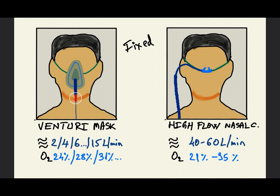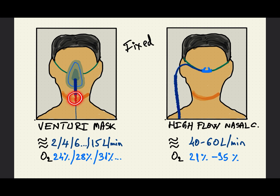The two devices shown here — the venturi mask and the high flow nasal cannula — are called fixed oxygen delivery devices, as they administer fixed amounts of oxygen depending on the flow chosen. The venturi mask, named from the venturi principle, is used in patients with COPD where we want to ensure that the set amount of oxygen does not vary due to air mixing, because COPD patients rely on their hypoxemic drive, which is abolished by increasing percentages of oxygen.